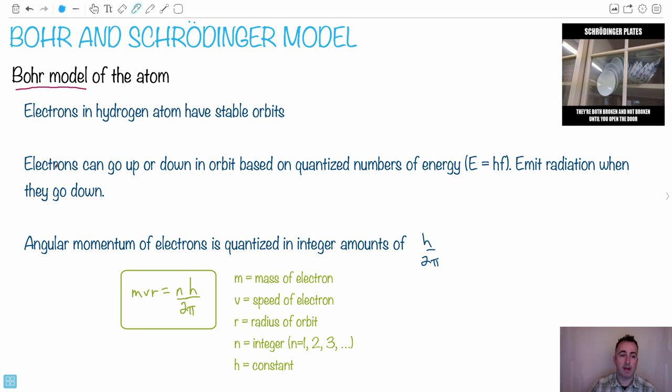Next thing, this whole thing we've been talking about before, that the electrons can go up or down in orbit based on these quantized numbers of energy. So this could be E equals hf. And of course they emit radiation when they go down. This is the whole idea about these energy levels when they go up, when they go down and they emit a photon.